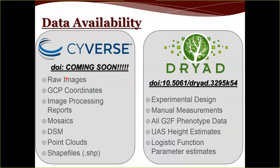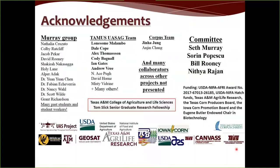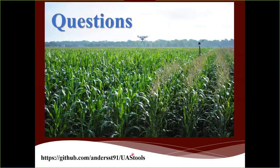All data from this study is publicly available. Images and UAS-processed data are on Cyverse, and the publication should be finalized soon with its DOI. Experimental designs, manual measurements, estimated phenotypes, and all logistic parameters are available on Dryad. We thank the College of Agriculture and Life Sciences, the Tom Slick Scholarship, and our NIFA-AFRI award for funding the majority of this research.